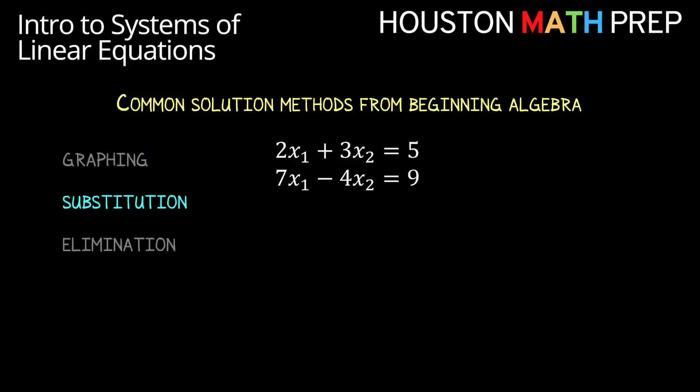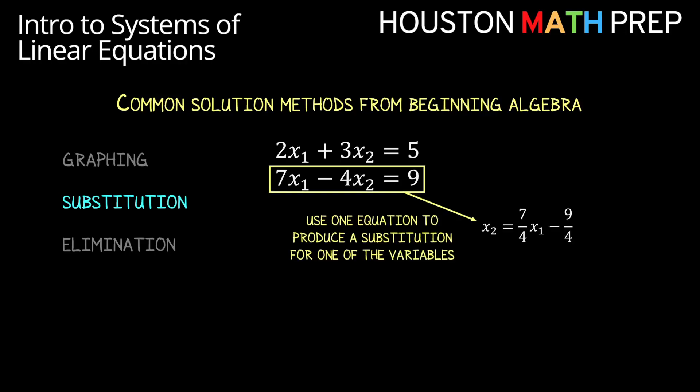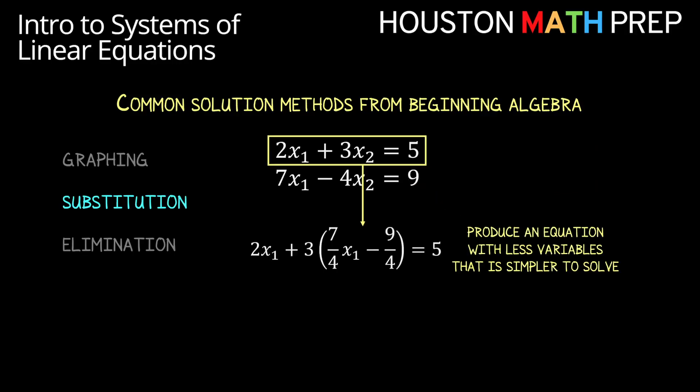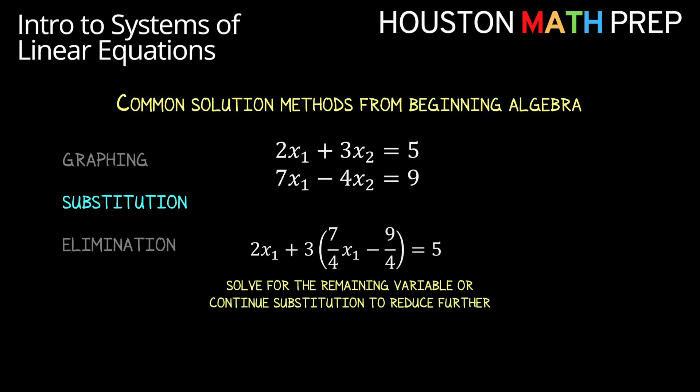The next big idea in solving that you encountered was probably substitution. This was the idea that we can use one of the equations solved for one of the variables to produce a substitution for that variable. We then take that information and substitute it into another equation in the system, and that allows us to end up with an equation that contains less variables and is hopefully easier to solve. Once we solve the remaining variable, we typically then use that answer and substitute the value back into equations in the system to get the rest of the solution.